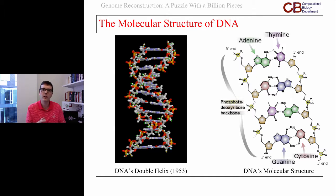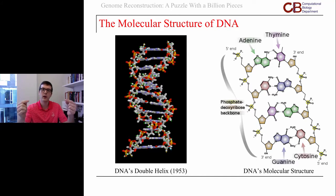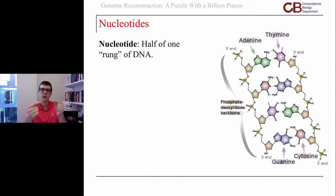You probably know that DNA forms this double helix shape that was discovered in 1953, which is essentially this long, twisted staircase. The rails of this staircase are essentially a phosphate deoxyribose backbone. And across the middle, what forms the rungs, are nucleotides. Half of one rung of DNA is essentially a nucleotide, and the nucleotides pair up.